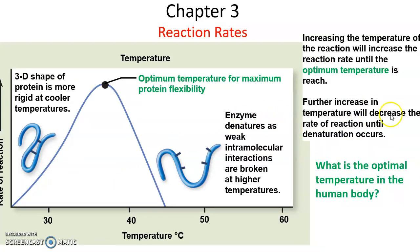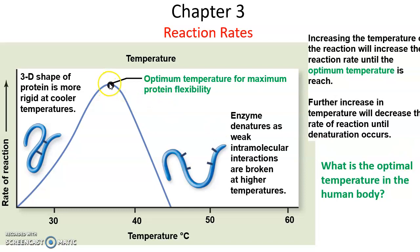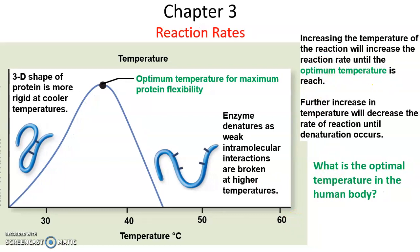Temperature can also affect the reaction rate. There is an ideal temperature that an enzyme functions at. Increasing temperature until you get to that optimal temperature will cause an increase in reaction rate. However, if you continue to increase the temperature, then the reaction rate will go down until eventually the temperature gets high enough that it causes denaturation and the enzyme doesn't work anymore. Increasing temperature will increase the reaction rate until you get optimal temperature. Further increase will decrease reaction rate until you get to denaturation. What's the optimal temperature in the human body? That's right, 37 degrees Celsius.